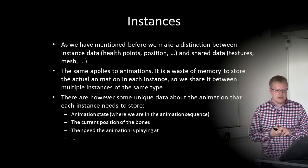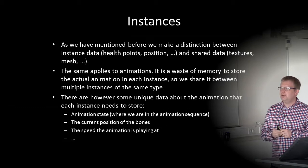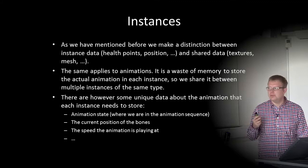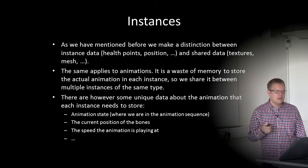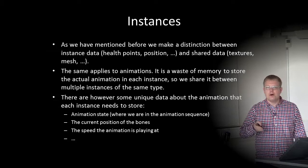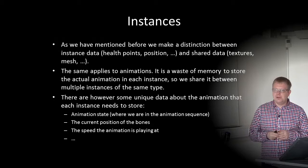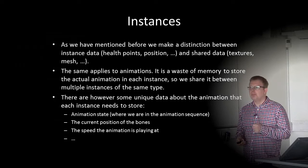As we've mentioned before, we make a distinction between instance data — health points, position — and shared data — textures and meshes. The same applies to animations. It's a waste of memory to store the actual animation in each instance if we have 200 orcs, so we share it between multiple instances of the same type. However, some unique data about the animation each instance needs to store: the animation state, how far we are in the animation sequence, the current bone positions, and the playback speed. An animation has both shared and unique data parts.